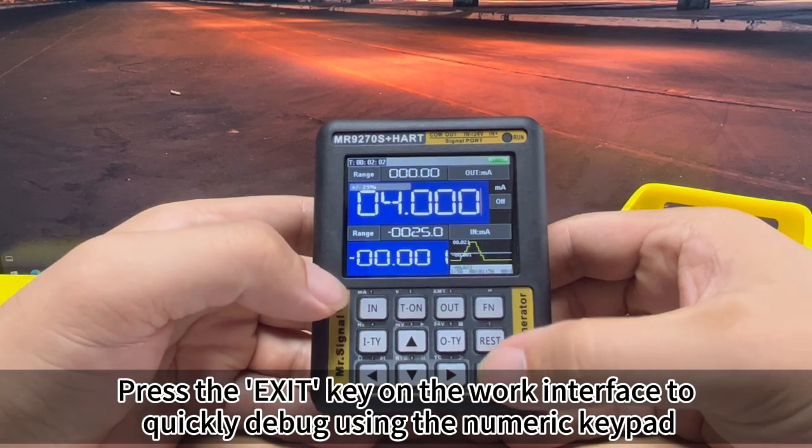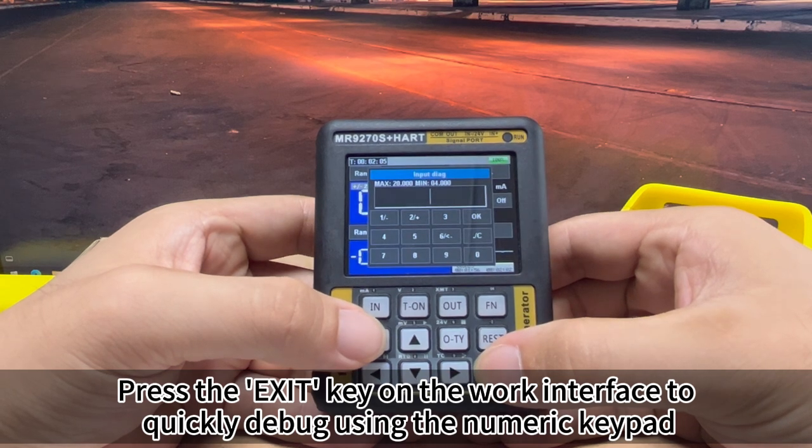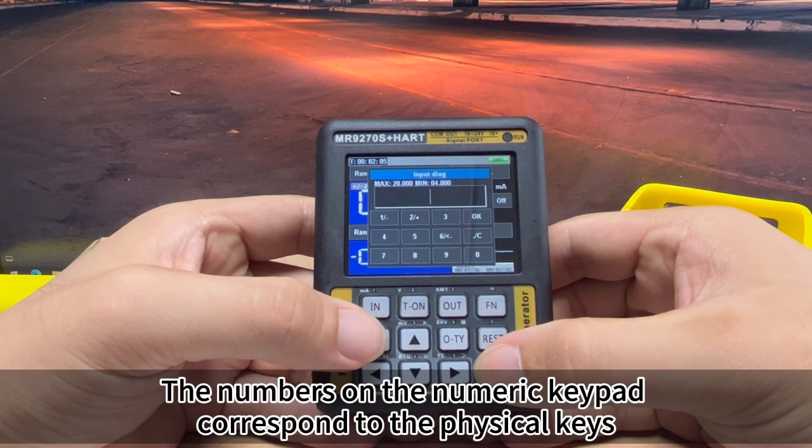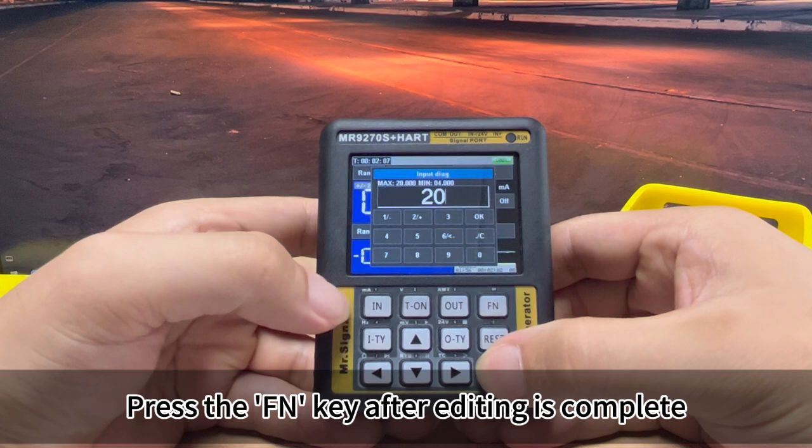Press the exit key on the work interface to quickly debug using the numeric keypad. The numbers on the numeric keypad correspond to the physical keys. Press the FN key after editing is complete.